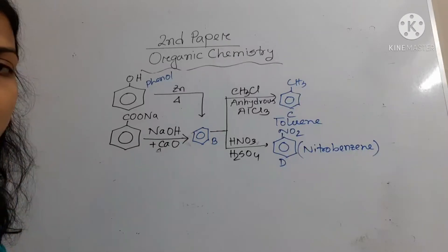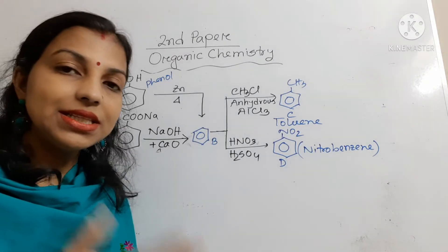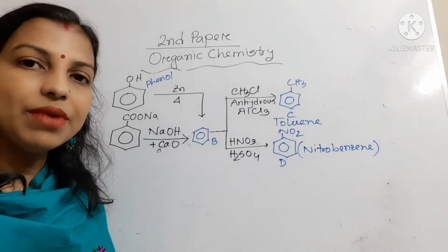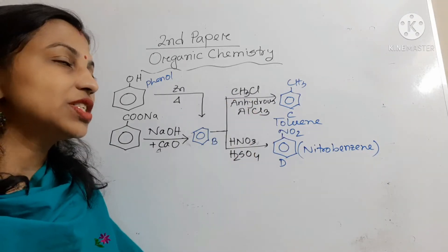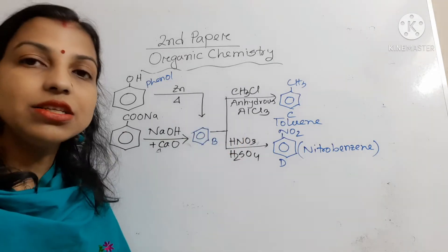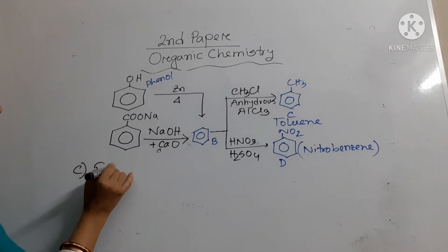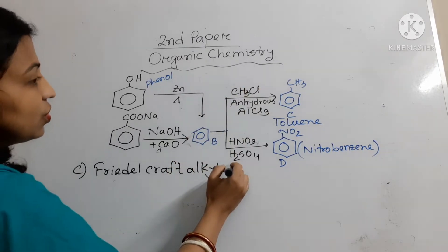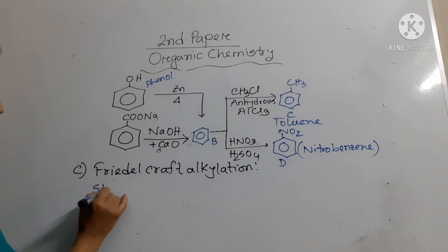When benzene forms toluene, the Friedel-Crafts alkylation reaction takes place. When benzene forms nitrobenzene, the nitration reaction takes place. Both are electrophilic substitution reactions with a similar type of mechanism. First, I will discuss the Friedel-Crafts alkylation reaction. This reaction takes place in the presence of anhydrous aluminium chloride, where methyl chloride reacts with benzene.